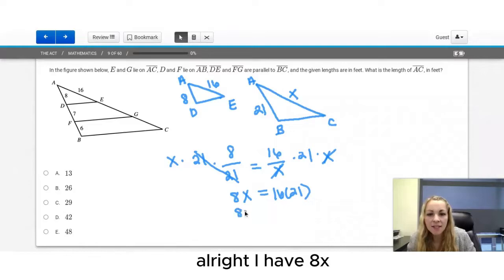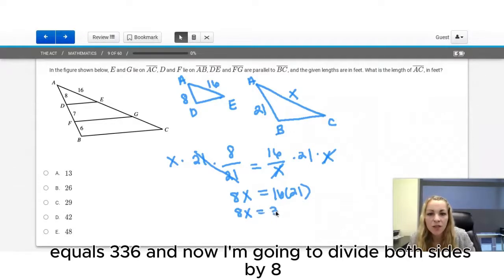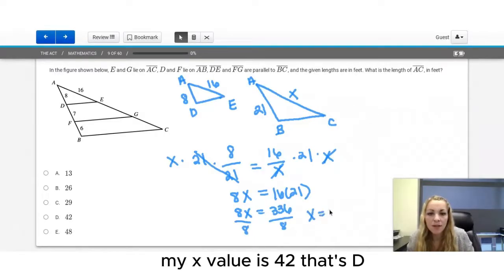Let's solve for X now. I have 8X equals 336, and now I'm going to divide both sides by 8. My X value is 42. That's D.